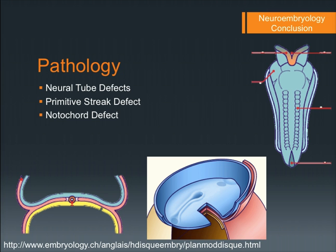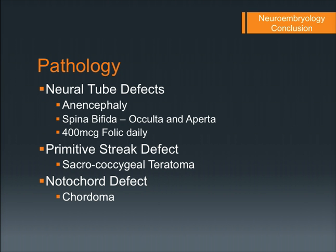On to pathology — what can go wrong? You have neural tube defects, primitive streak defects, and notochord defects. Neural tube defects include anencephaly, a problem with cephalic neuropore closure resulting in no cranial development — not compatible with life. Spina bifida has a larger range: occulta, the hidden version with problems in the vertebral arches closing, and aperta, the apparent type, ranging from meningeal cysts up to nerves themselves being exposed.